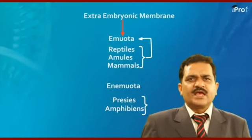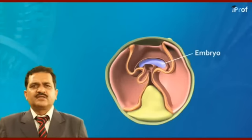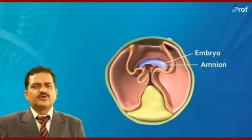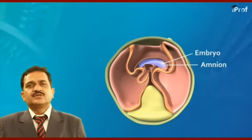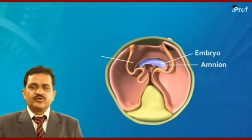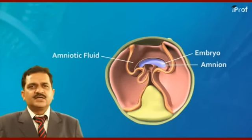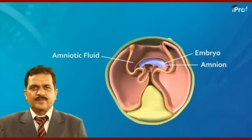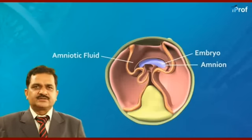Extra-embryonic membranes surround the embryo. The outermost layer is called the amnion. The amnion secretes the amniotic fluid, which provides a natural swimming pool to the embryo. This fluid is formed by the process of amniocentesis.